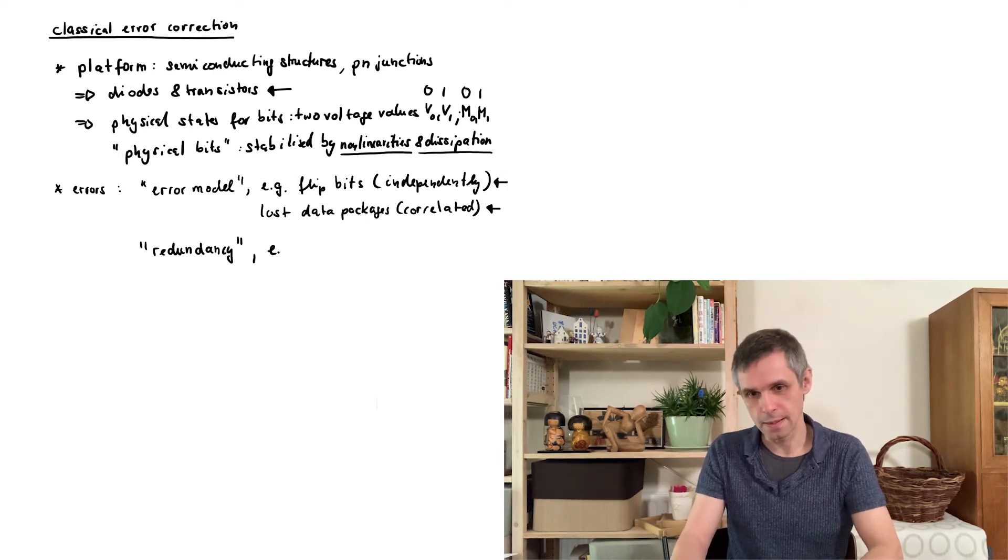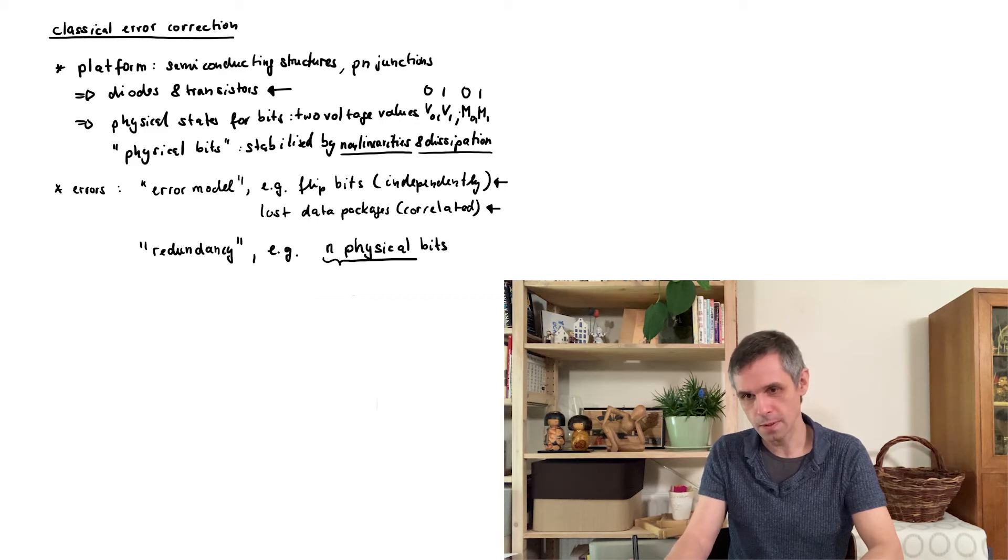For instance we could then take a certain number of physical bits, I call this number n, and use these to encode a smaller number of so-called logical bits, and this number I call k.